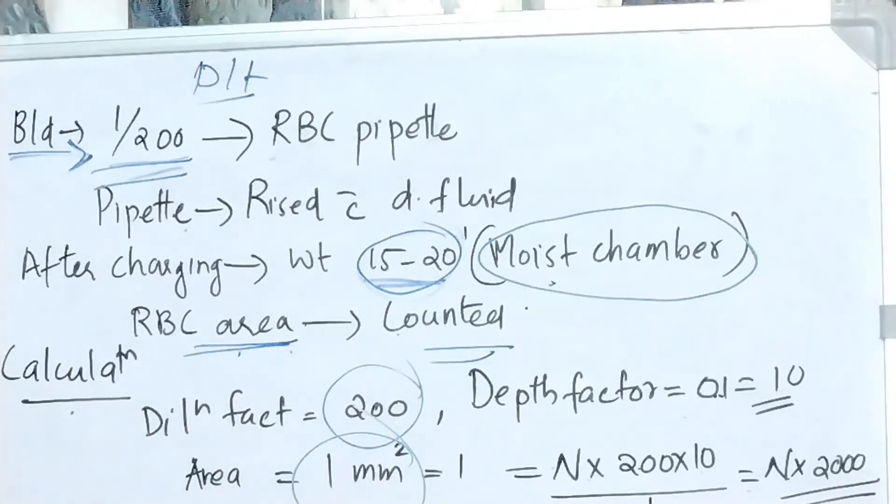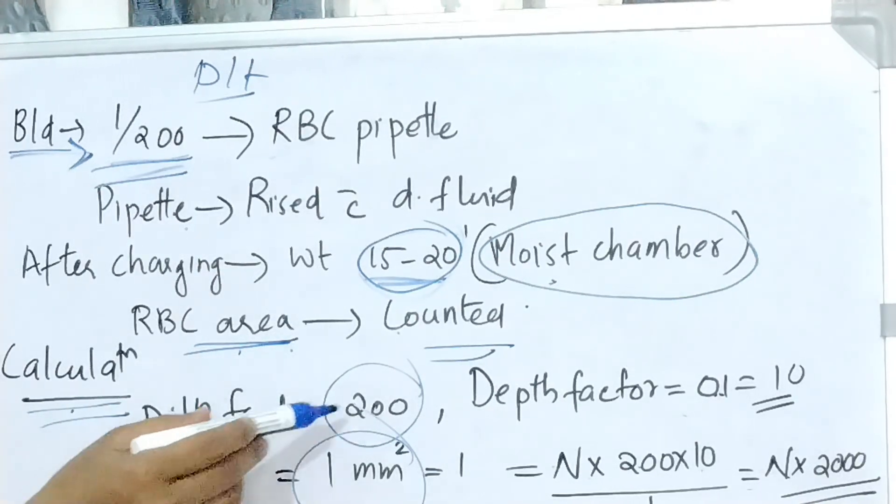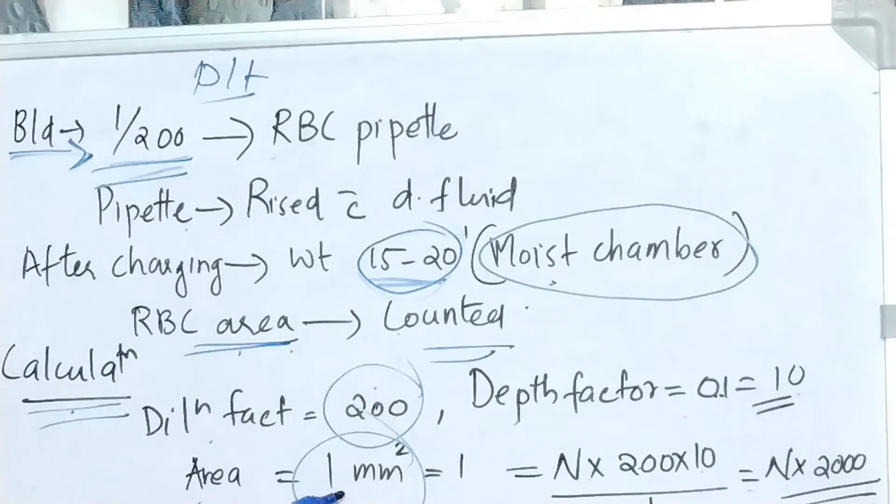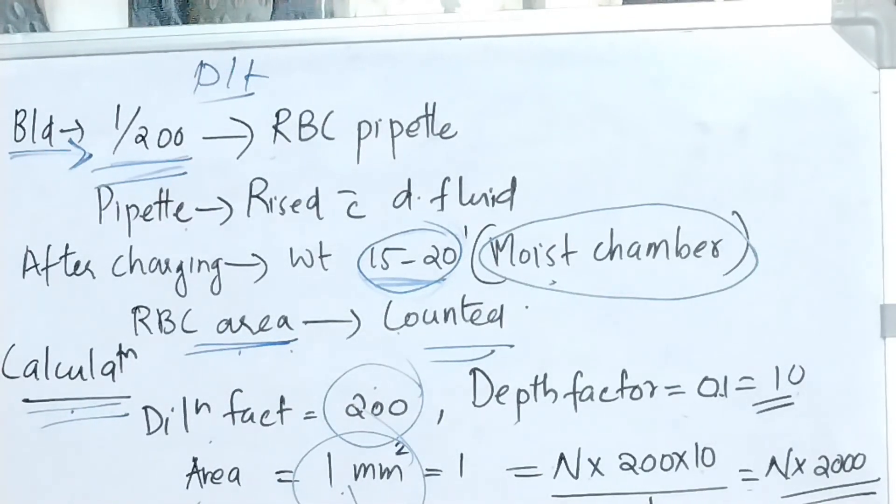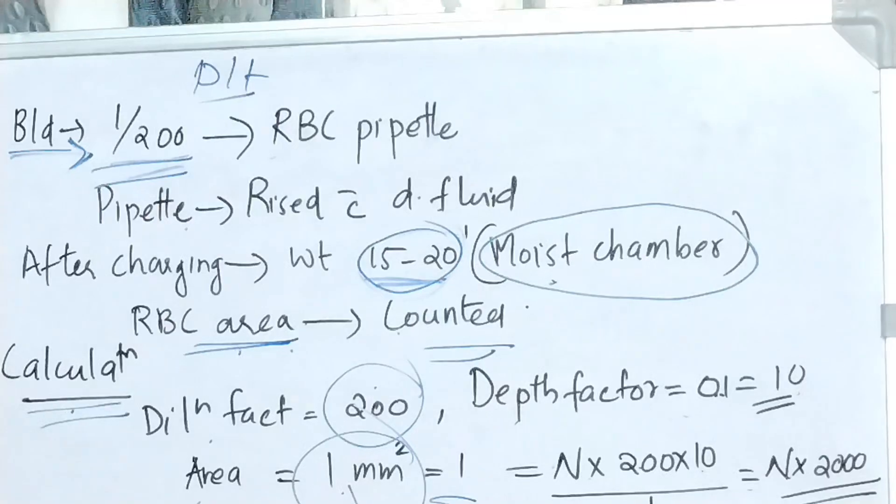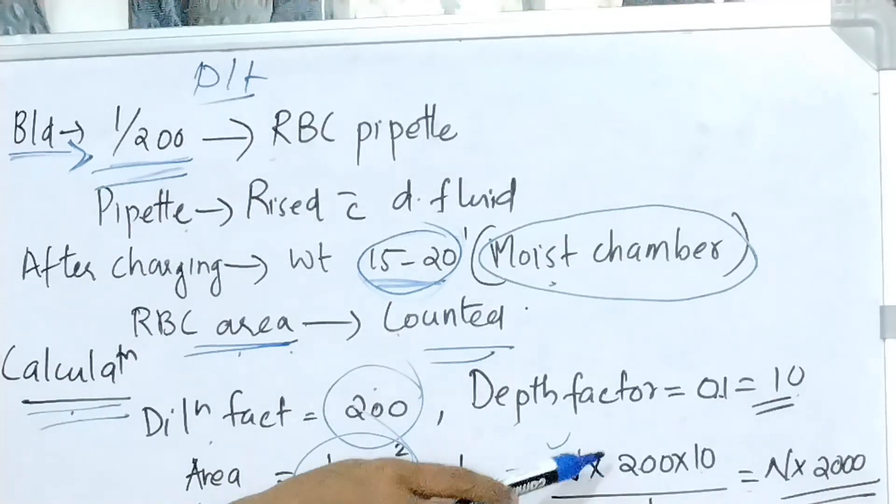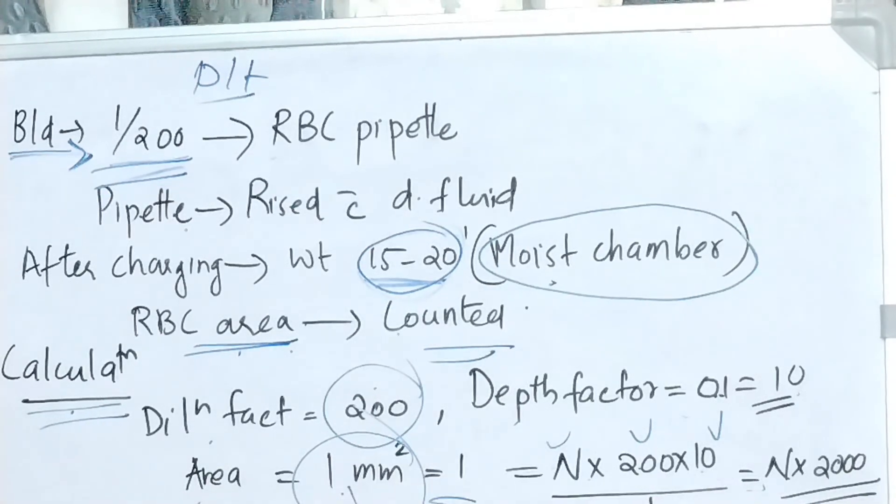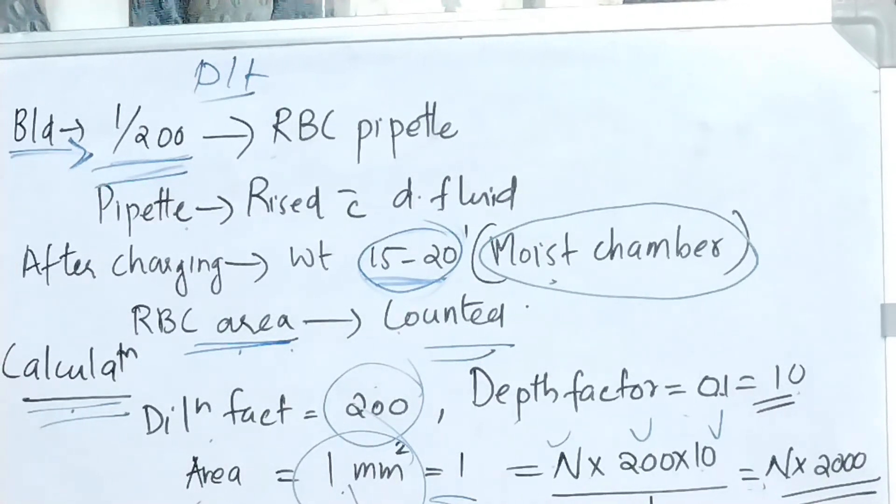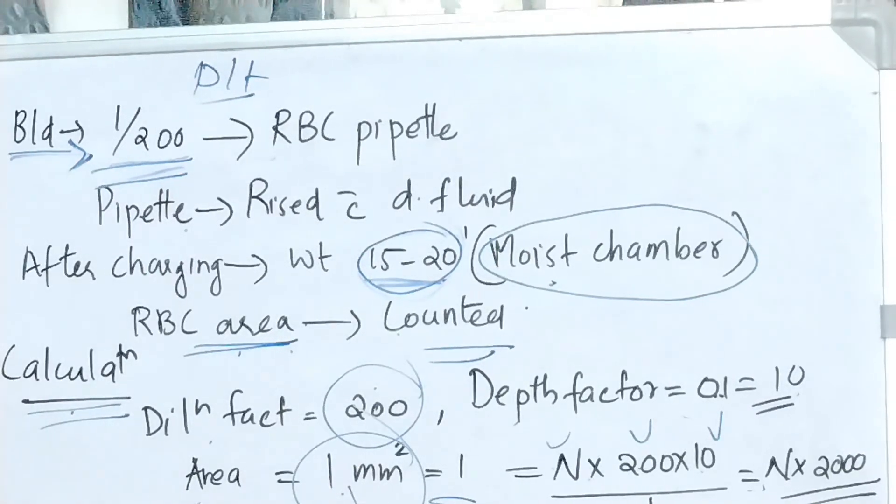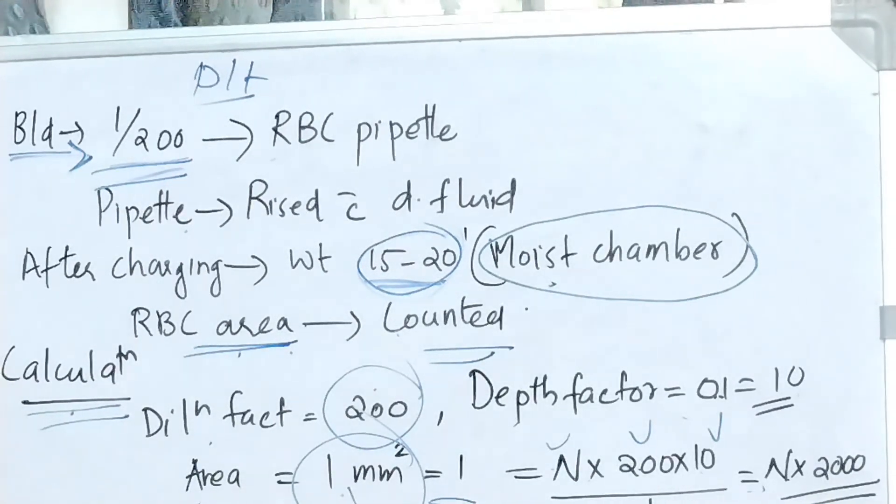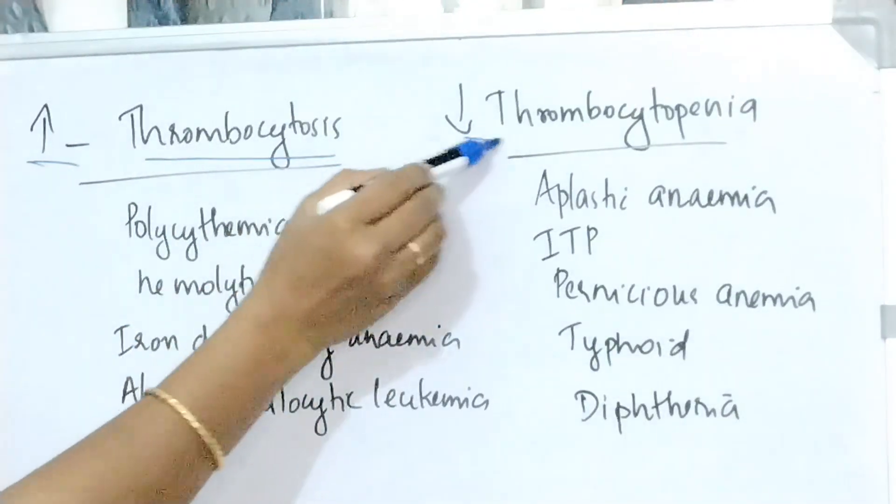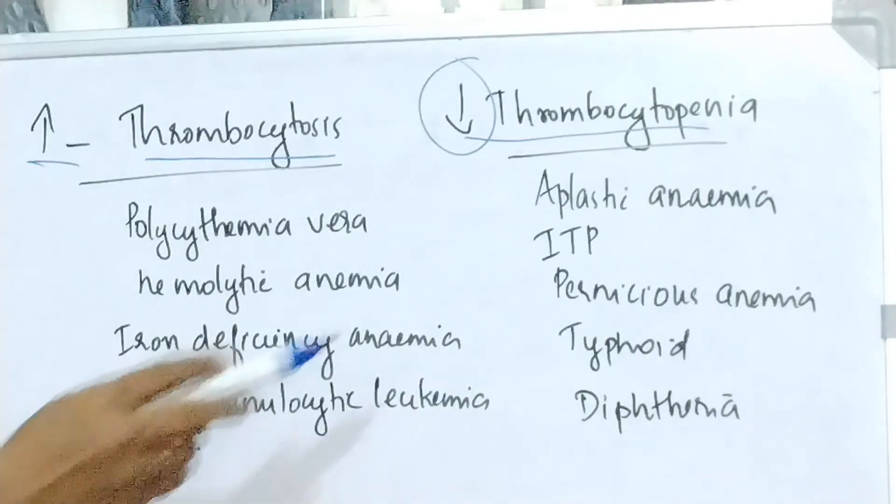Next is calculation. As we are taking RBC pipette, the dilution is 1 in 200, the dilution factor is 200, depth factor is 10 and area counted is 1 mm square. So the calculation is like N times 200 times 10 divided by 1 where 200 is the dilution factor, 10 is the depth factor and 1 is the area so that N times 2000 is the calculation factor. Increased platelet count is called as thrombocytosis and decreased count is called as thrombocytopenia.